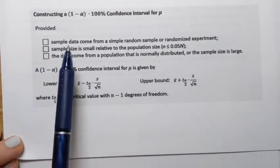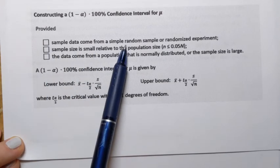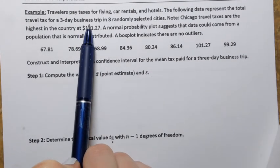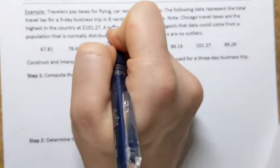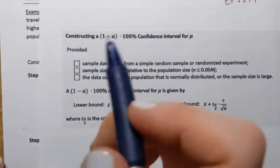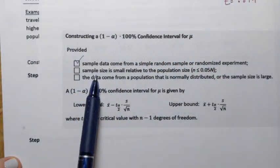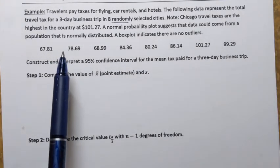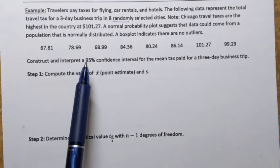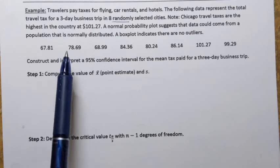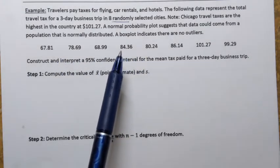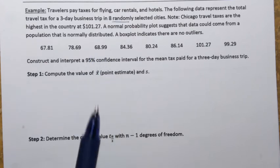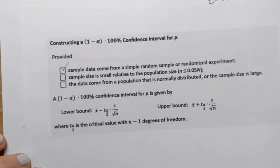Checking the conditions: First, sample data must come from a simple random sample. The problem states those eight cities were randomly selected — that's the keyword — so condition one is satisfied. Second, sample size must be small relative to population size. The population is all U.S. cities — thousands upon thousands. Eight cities is definitely less than five percent of all U.S. cities, so condition two is satisfied.